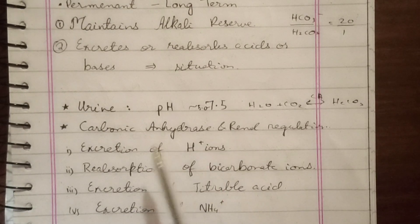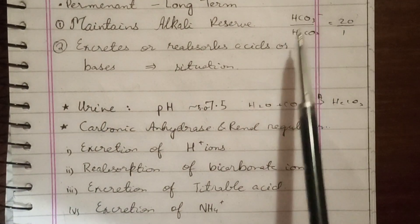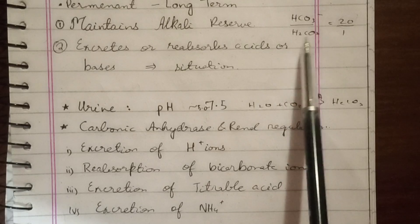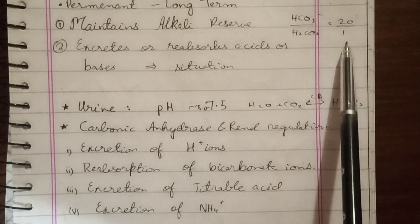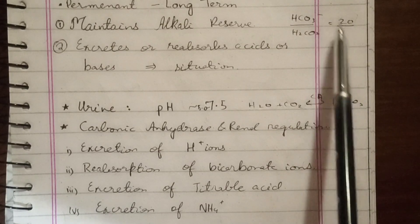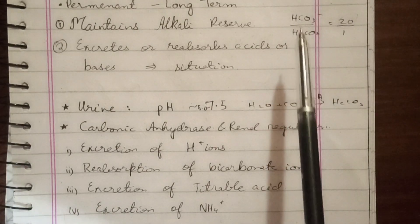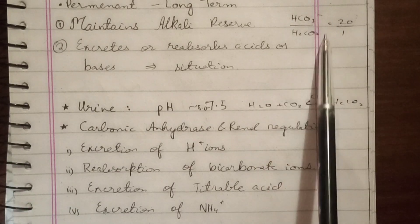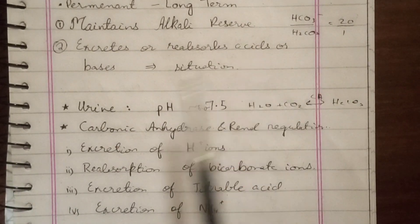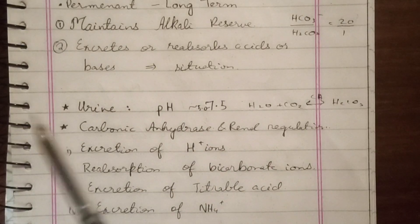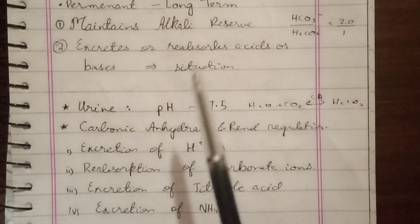The renal mechanisms maintain the alkali reserve. As we have seen in previous videos, the concentration of bicarbonate ions to carbonic acid is a 20:1 ratio — bicarbonate is 20 times more than carbonic acid. This ratio is called the alkali reserve, and these mechanisms maintain and buffer pH imbalances.